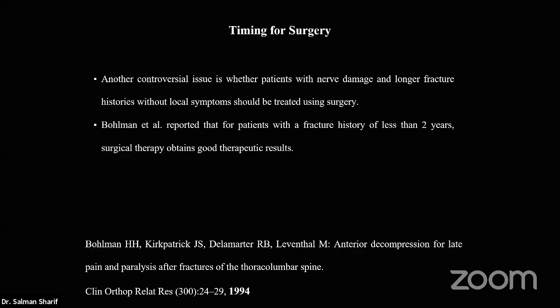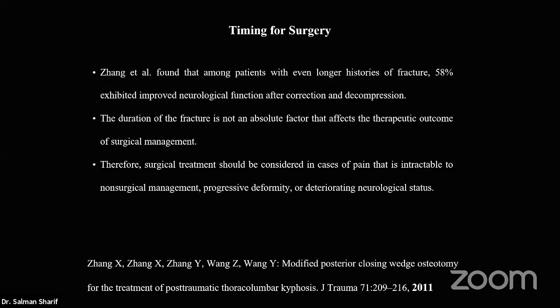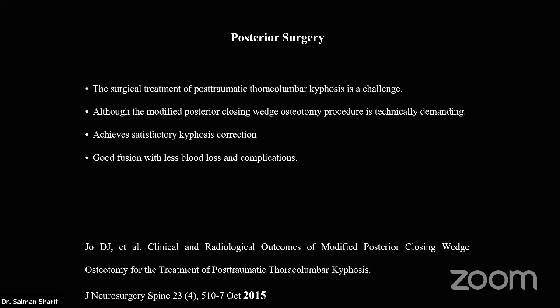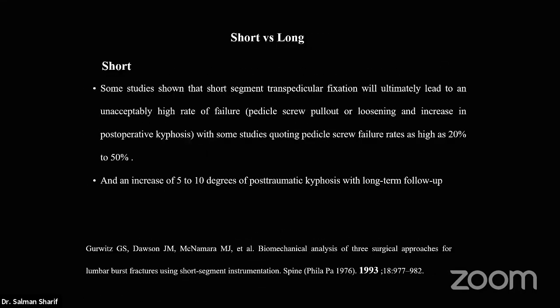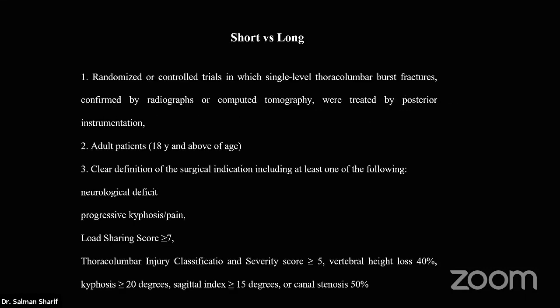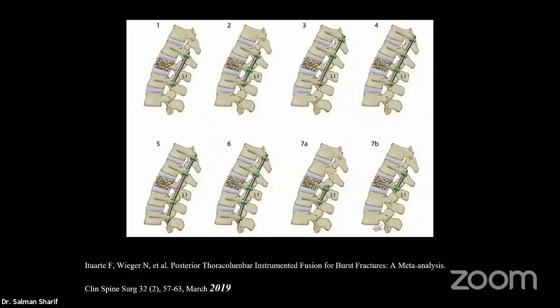Timing for surgery is a different topic. We have talked about indications — anterior, posterior, or combined surgery — and the length of the construct. This paper divides constructs into seven groups and says the fourth group is very good to correct the deformity: placing screws on the fractured area, two levels above the fractured vertebra and one below, corrects better than the other configurations.